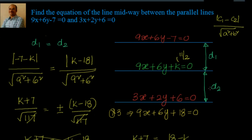Let me summarize how we solved this. We were asked to find the equation of the line between two parallel lines. We know that line must also be parallel to them, so we wrote its equation as 9x plus 6y plus k equal to 0. If this line is midway between the first and third line, then the distance between the first and second parallel line and the second and third parallel line should be equal — only then will the second line be in the middle of the first and third.